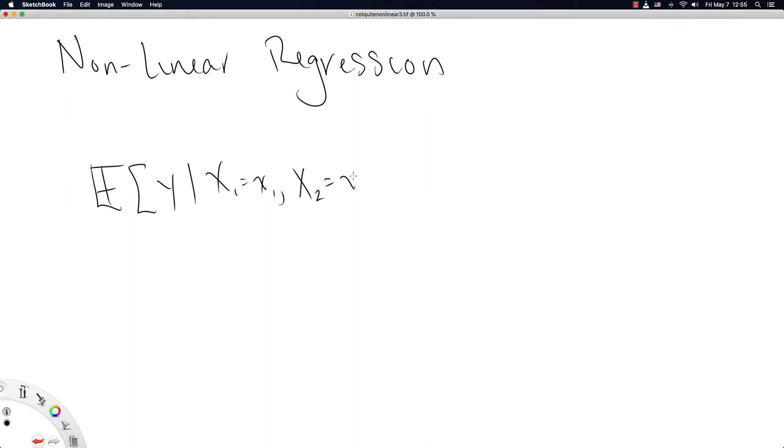It's still specifying a conditional expectation. And we'll just do it with two x-axis variables. Maybe you have something like e to the power of negative beta 1 times x1 divided by beta 0 plus beta 2 times x2. Now, notice the coefficients, the betas themselves, show up nonlinearly.